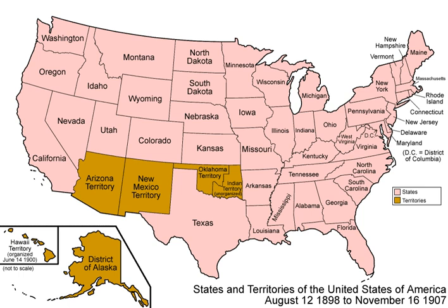The History of the United States from 1865 until 1918 covers the Reconstruction Era, the Gilded Age, and the Progressive Era, and includes the rise of industrialization and the resulting surge of immigration in the United States. This article focuses on political, economic, and diplomatic history.